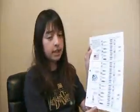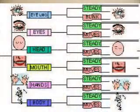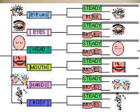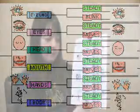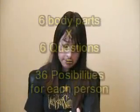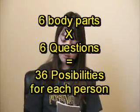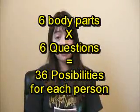We're going to analyze the data now. I asked six questions, and there are six parts of the body I used. As you can see here, I used the eyelids, the eyes, the head, the mouth, the hands, and the body. So I multiplied those together and I got a total of 36 possibilities for each person.